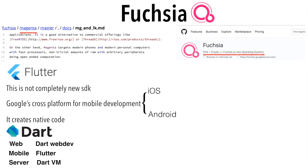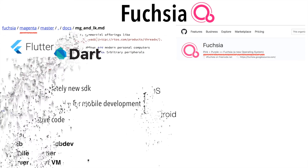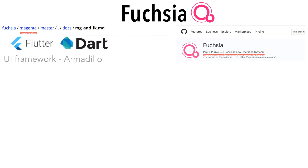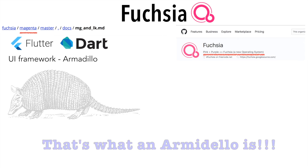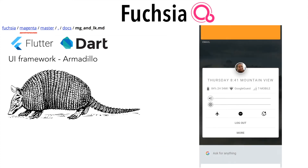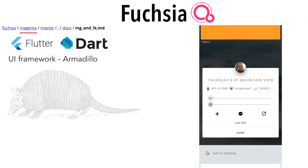So it becomes quite clear that Google has chosen Flutter and Dart for Fuchsia with quite an amount of consideration. When it comes to UI, Fuchsia's UI framework is called Armadillo. If you are wondering how the UI of Armadillo looks like, here it is.